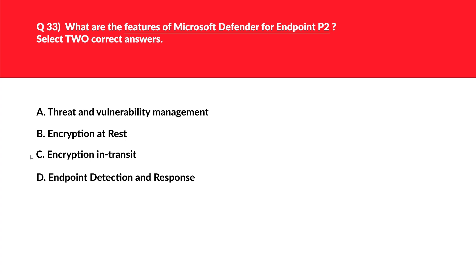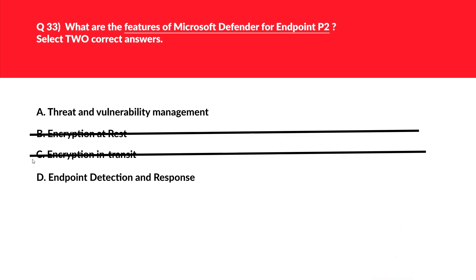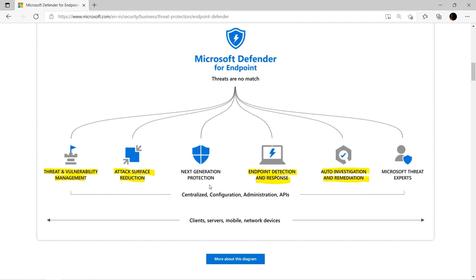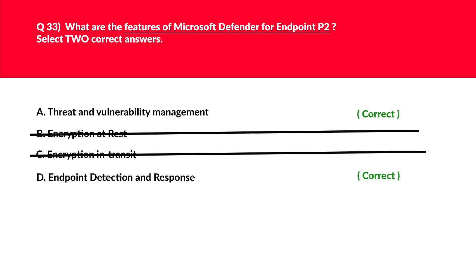Let's look at options B and C together. Microsoft Defender is not related to encryption — instead it's more related to threats — hence we can reject options B and C. Let's look at option D, endpoint detection and response. Even if I'm not sure, we managed to get this by the process of elimination. The high-level diagram for Microsoft Defender for endpoints shows more capabilities, but for SC-900 you just need to remember the basics highlighted in yellow. We'll log A and D as the correct answers.